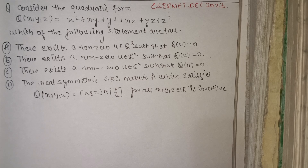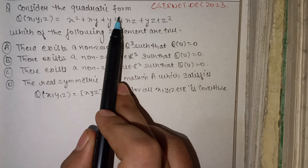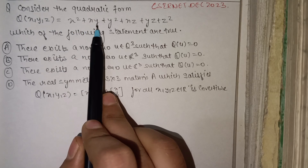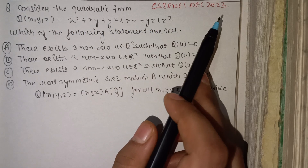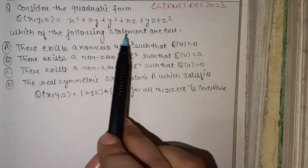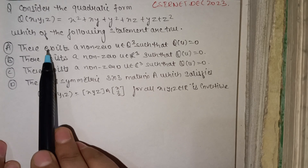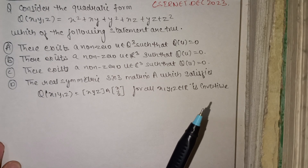Hello everyone, welcome to our channel Higher Mathematics. In this video lecture I am going to discuss the next PYQ of linear algebra asked in CSIR NET December 2023. Our question is: consider the quadratic form Q(x,y,z) equals x² + xy + y² + xz + yz + z², and which of the following statements are true?